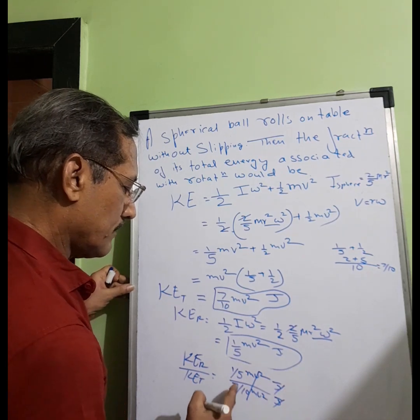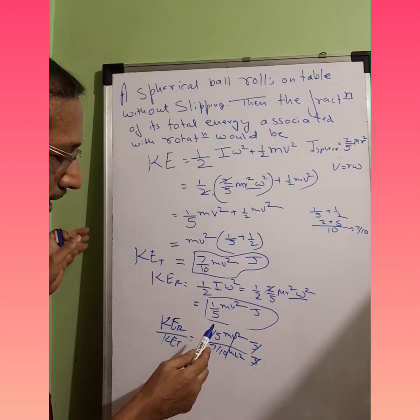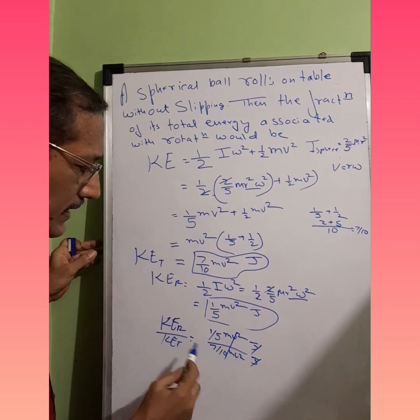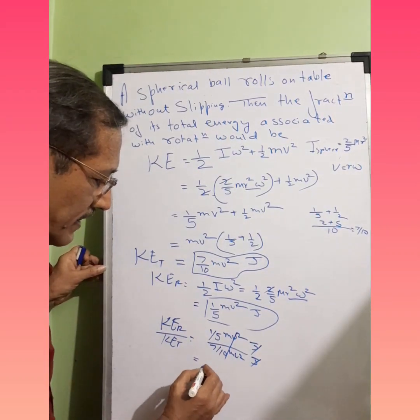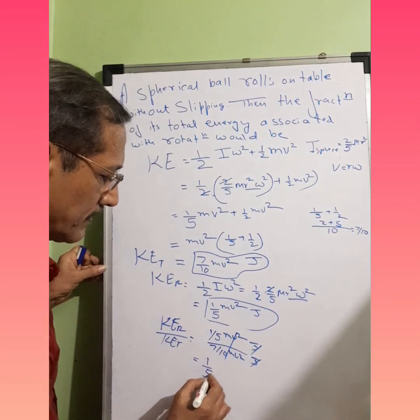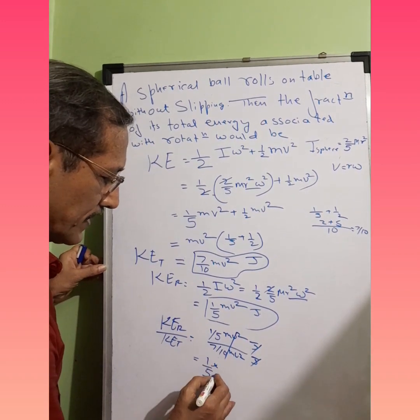So ultimately what we have is 1/5 into... 7 remains down there and 10 goes up there. So it is 2 5s are 10, so the answer gets 2/7.